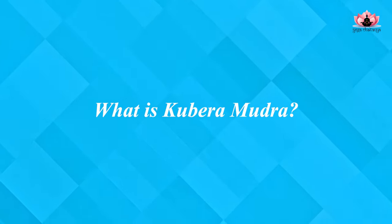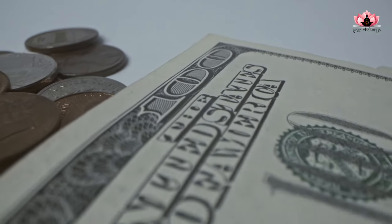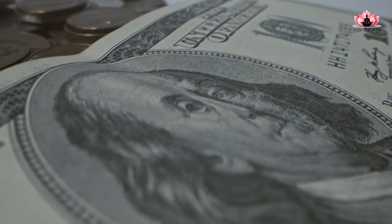What is Kuber Mudra? Kuber Mudra is a Sanskrit term that translates into a gesture of Kuber. It is a combination of two words: Kuber and Mudra. Kuber is a Hindu god of wealth and prosperity, and Mudra means a gesture. This gesture is said to bring abundance and financial stability to those who practice it.